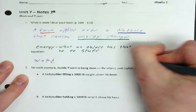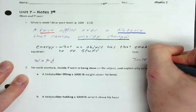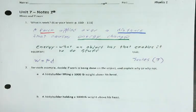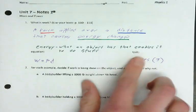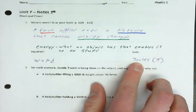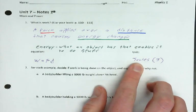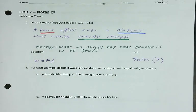The unit is joules — J-O-U-L-E-S. It's not jewels as in diamonds. It's joules as in the dude it's named after. There's a guy it's named after.